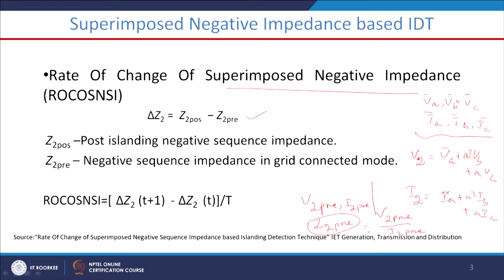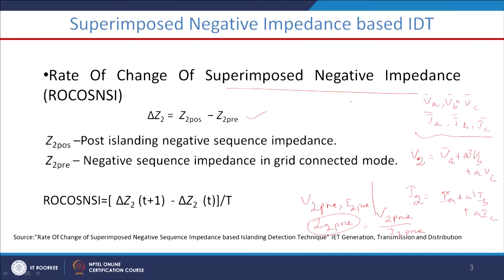Now, suppose islanding occurs. During islanding mode of operation, the islanding relay mounted at the terminal of the DERs continuously measures voltage and current, and the corresponding negative sequence components are calculated continuously. So Z2 is continuously calculated at the terminal of the distributed energy resources. When islanding occurs, V2_post and I2_post are also calculated, and we compute Z2_post = V2_post / I2_post.